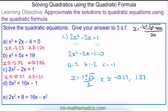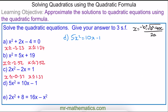For question d, we make the equation equal to 0, giving 5x² − 10x + 1 = 0. So a = 5, b = −10, and c = 1.